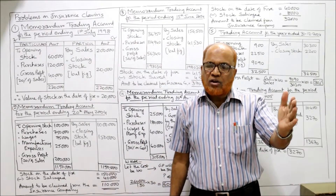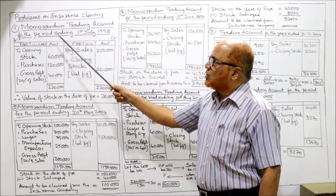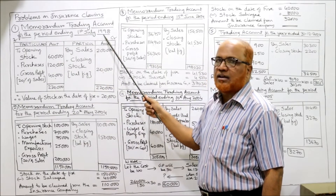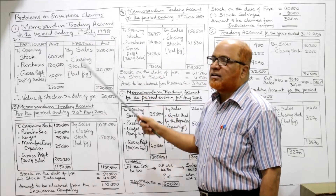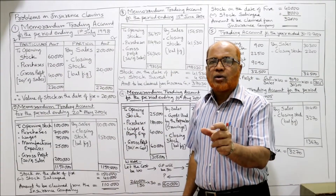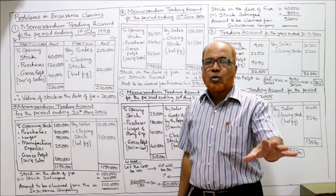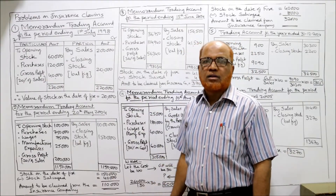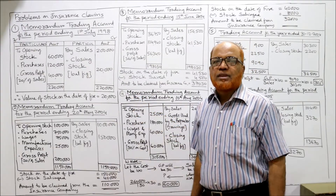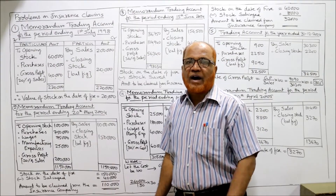We prepare the memorandum trading account for the period ending 1st July 1998 to find out how much stock was in the godown on the date of fire. On the credit side, sales are given as 2 lakh from the beginning of the year to the date of fire.